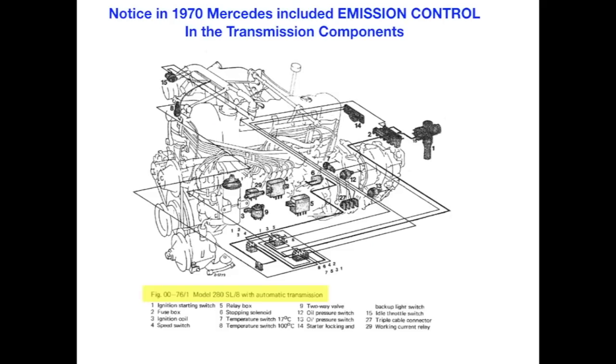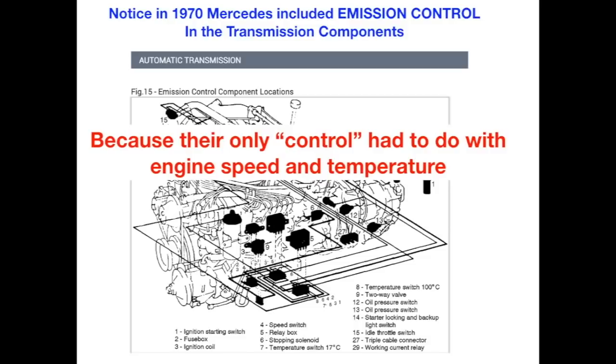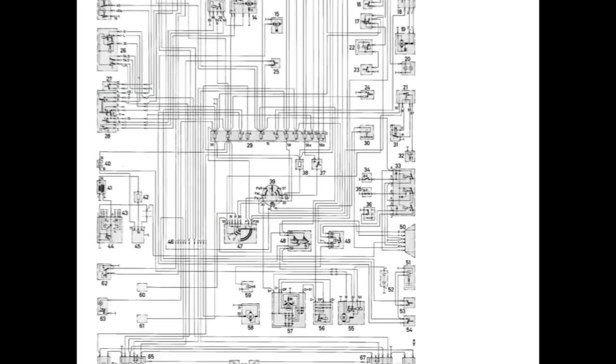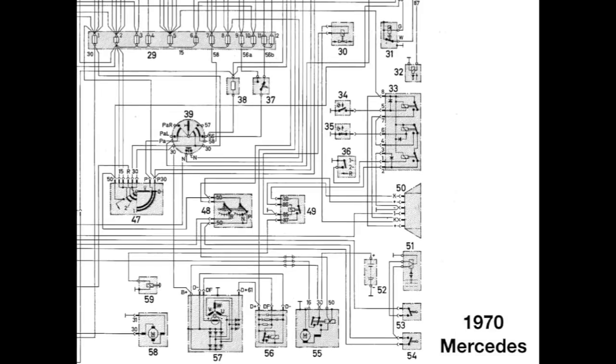In 1970, Mercedes included an emission control system in the transmission components, and you can see it listed here. Why would they do that? Because their only control had to do with engine speed and temperature. If we're going to look at the emission control, we do not need to look at the entire diagram, just this corner down here.